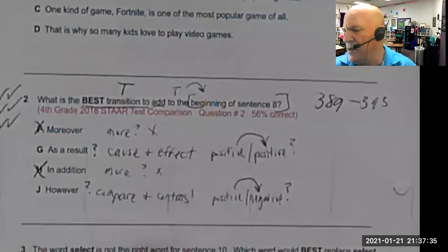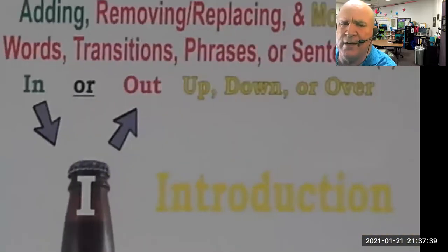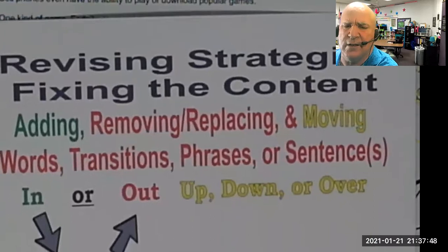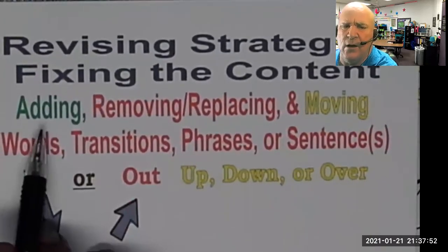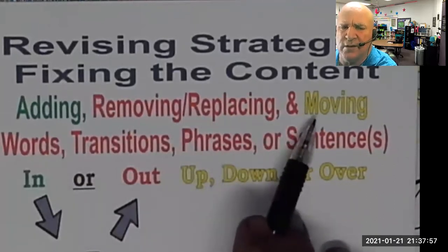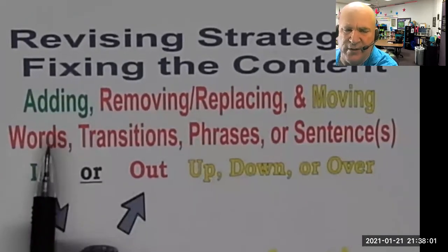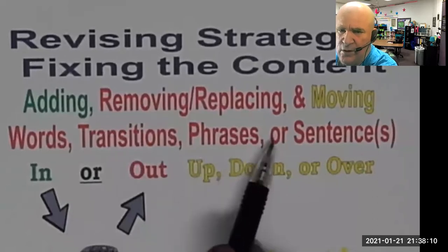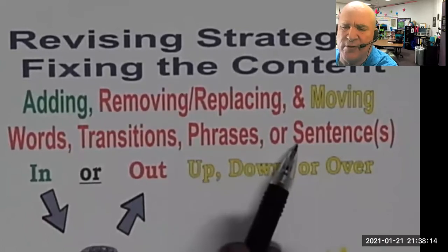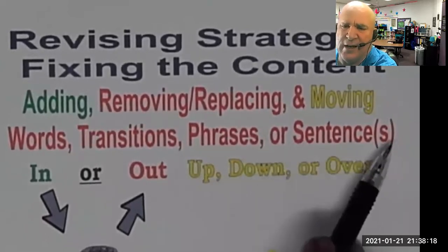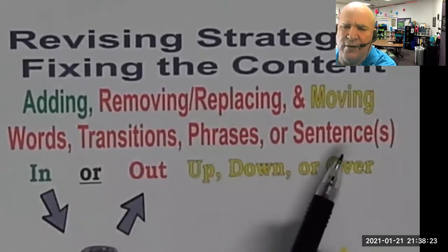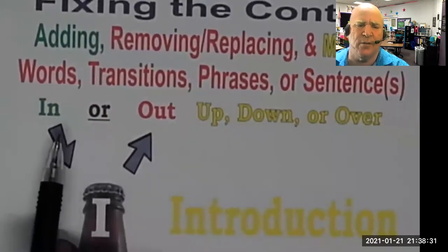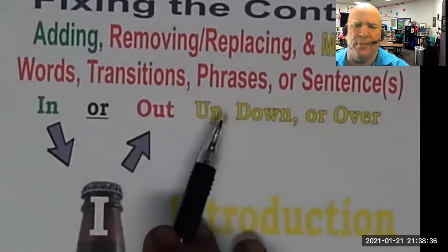If you're following along, it's on pages 389 to 393. In my binder's revising portion there's a keyword strand sheet, and a page called 'Revising Strategies — Fixing the Content.' That's when you add, remove, replace, or move the content around. For revising passages, it's only going to be a word, a phrase like a transition, or one sentence — that's the most you'll ever revise in a passage. If you have an essay, you might add, remove, replace, or move a few sentences to improve content.